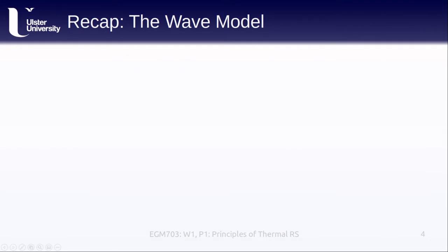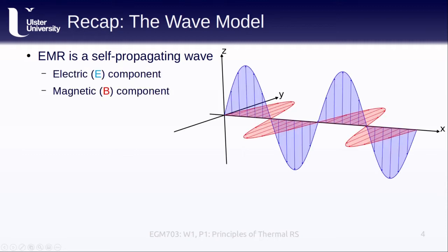Electromagnetic radiation is a self-propagating wave. By self-propagating, we mean that, unlike water waves or sound waves, electromagnetic waves travel through space without any external influence. As the name suggests, electromagnetic waves have both an electric component and a magnetic component. One of the major lessons of 19th century physics is that a changing electric field induces a magnetic field, and vice versa. So an electromagnetic wave moving through space has both an electric and a magnetic component, usually denoted E and B respectively. The electric component oscillates in one plane — in this example, the XZ plane — while the magnetic component oscillates in a plane at a 90 degree angle, in this example the XY plane.